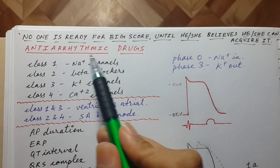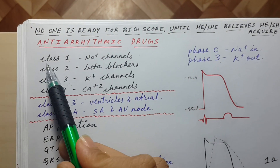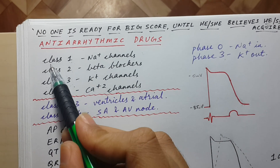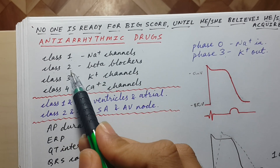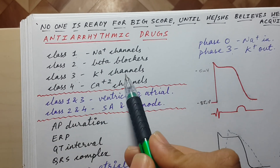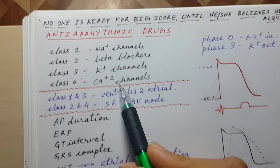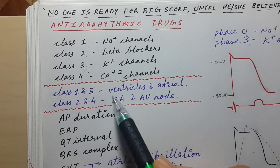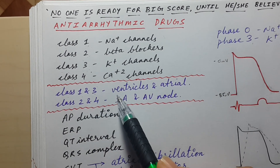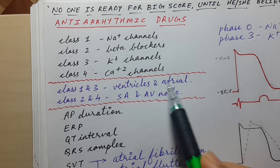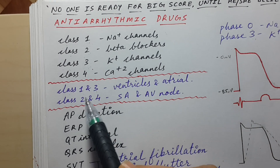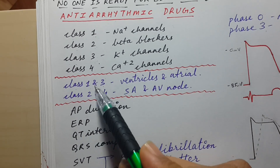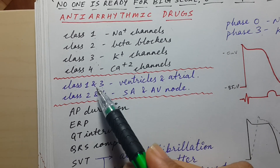Today we will be discussing anti-arrhythmic drugs, with main focus on class 1 and class 3 anti-arrhythmics. Class 1 are sodium channel blockers, class 2 are beta blockers, class 3 are potassium channel blockers, and class 4 are calcium channel blockers. A simplified rule: class 1 and class 3 work more on ventricular and atrial arrhythmia, while class 2 and class 4 work more on the SA node and AV node.